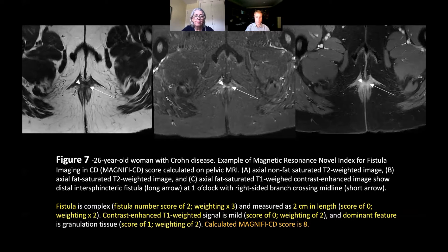We then looked at the contrast-enhanced signal in the right panel, and we usually compare that to the adjacent vessel. In this case the enhancement is relatively subtle — very similar to the adjacent vessel, perhaps a little bit less — giving a score of mild enhancement, which is a score of zero. We also look at the pattern of enhancement. We don't see any low-signal centre; there's no fluid in it, so we assume this fistula is granulation tissue rather than active pus.